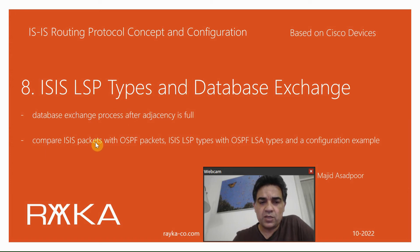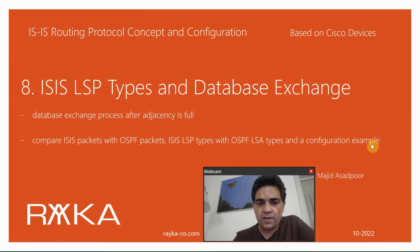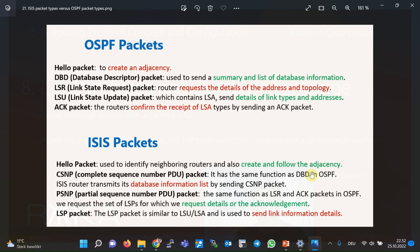To better understand this section, we will compare ISIS packets with OSPF packets, and ISIS LSP types with OSPF LSA types. At the end, we will have a configuration example to demonstrate and deep-dive into the database exchange of ISIS routing protocol. In ISIS, like other routing protocols, after adjacency between routers is established, the database exchange process between neighboring routers begins. However, ISIS protocol is designed independently of OSPF, but they are very similar, and comparison between them helps us understand ISIS better.